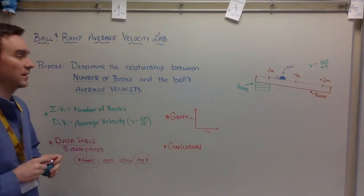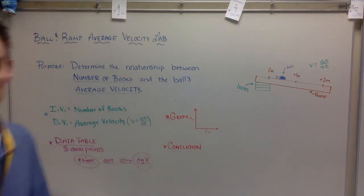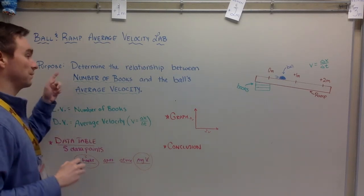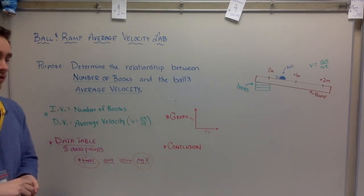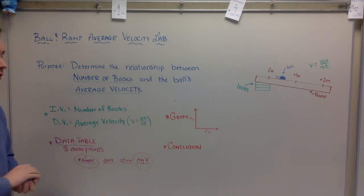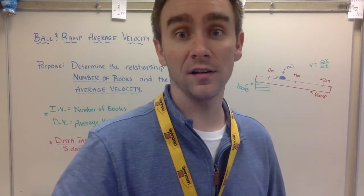And you're going to make a conclusion. The conclusion is going to be pretty straightforward. Remember, what is the relationship between the number of books and the average velocity? Is it a constant relationship, or is it changing, and how do you know? That's going to be it. Good luck and have fun figuring it out.